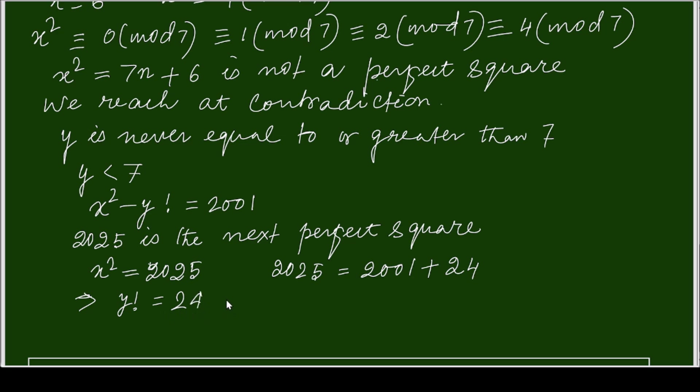That means y factorial equals to your 24. So when y factorial is 24, that means y is equal to your 4. Because y factorial equals to 4 into 3 into 2 into 1.